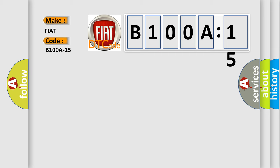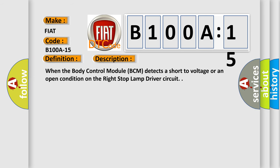The basic definition is combined rear right light one circuit short to battery or open. And now this is a short description of this DTC code: When the body control module BCM detects a short to voltage or an open condition on the right stop lamp driver circuit.